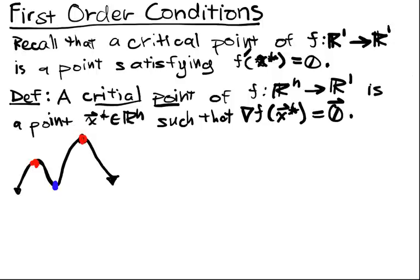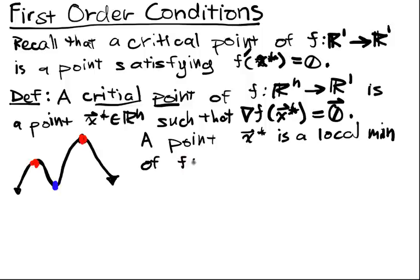But a local—a point x* is a local min or max of f from Rn into R